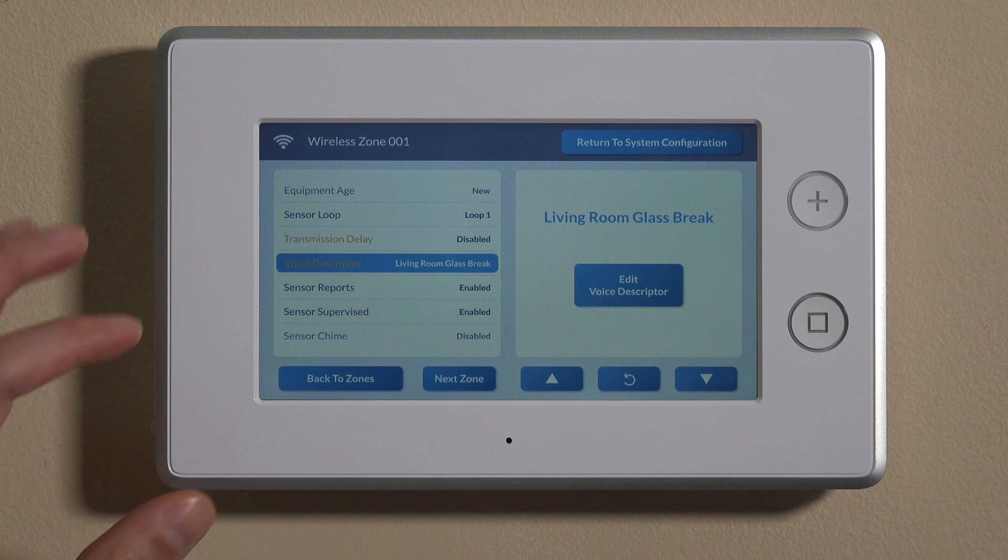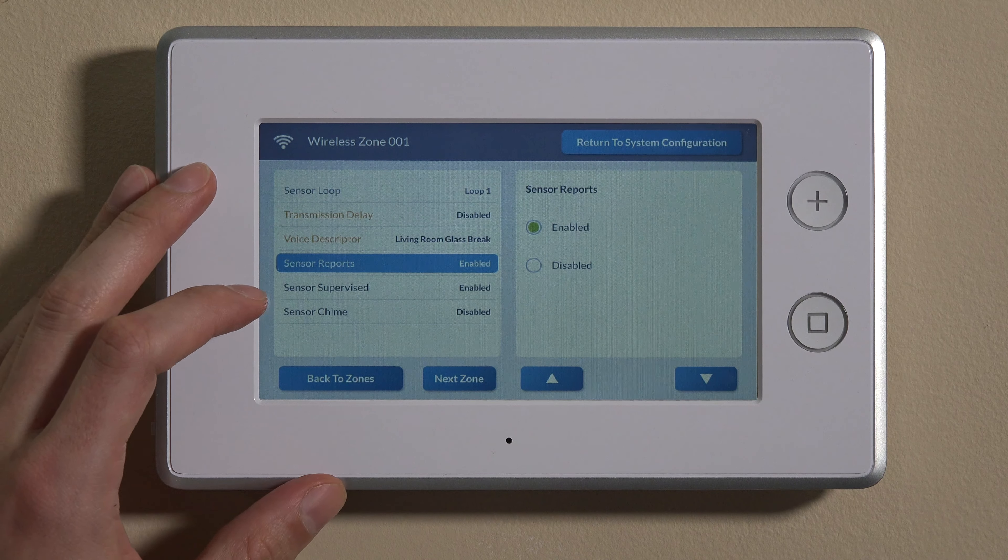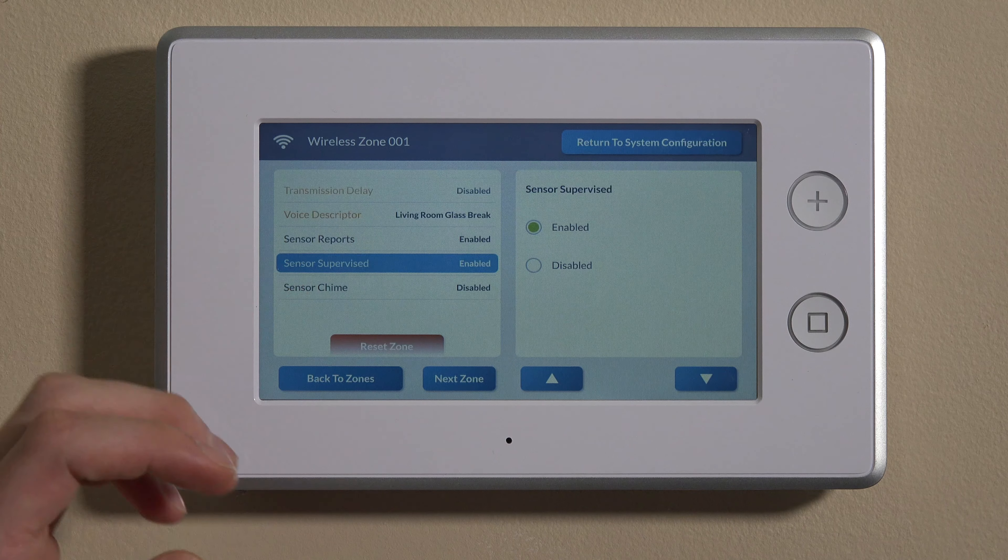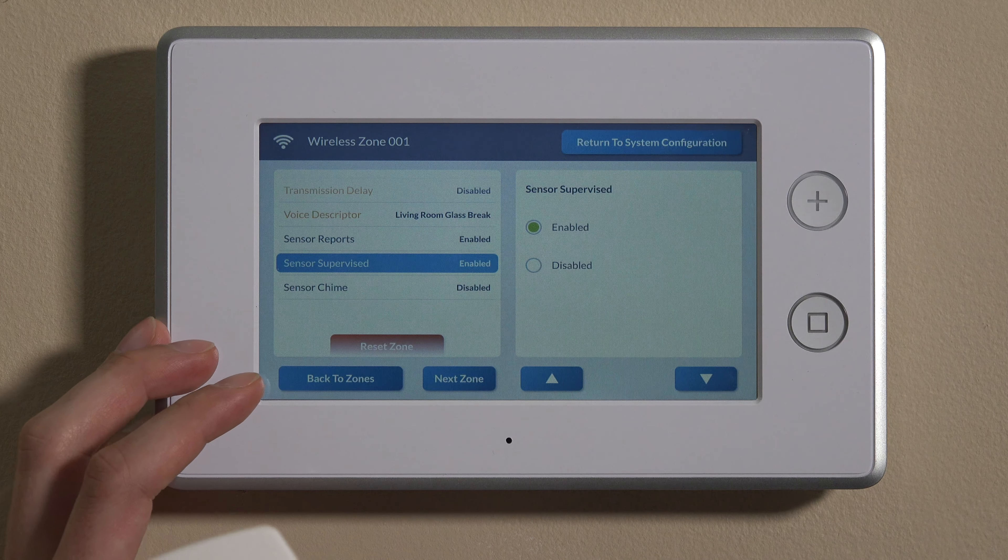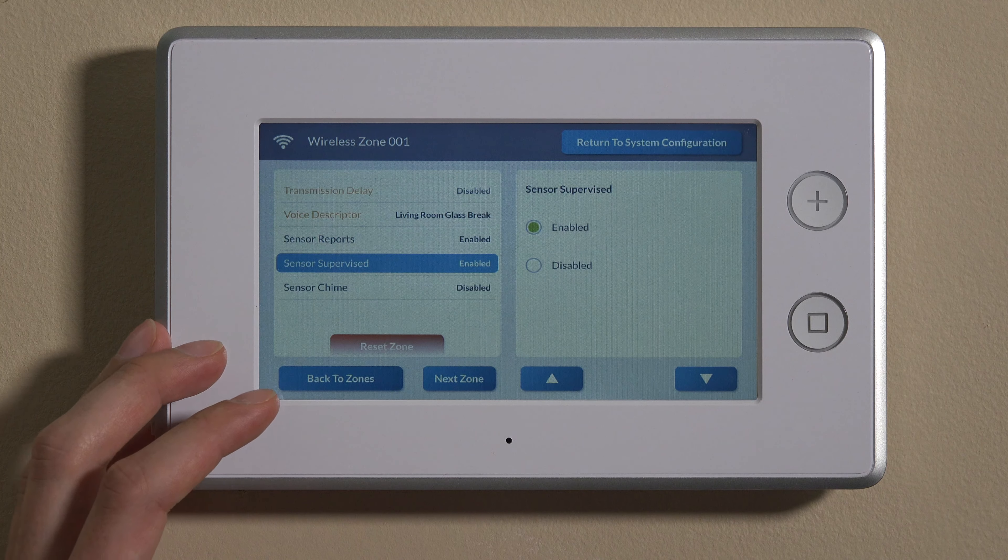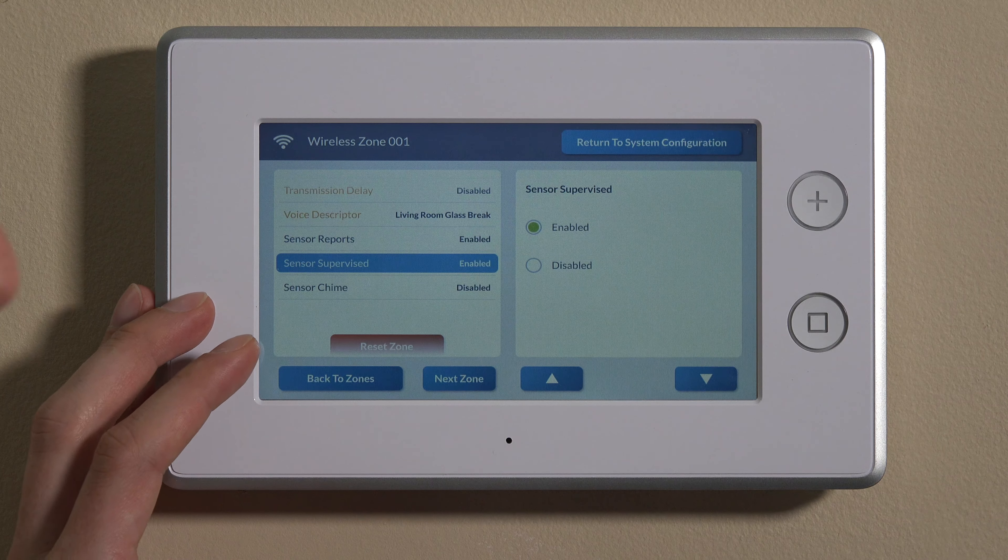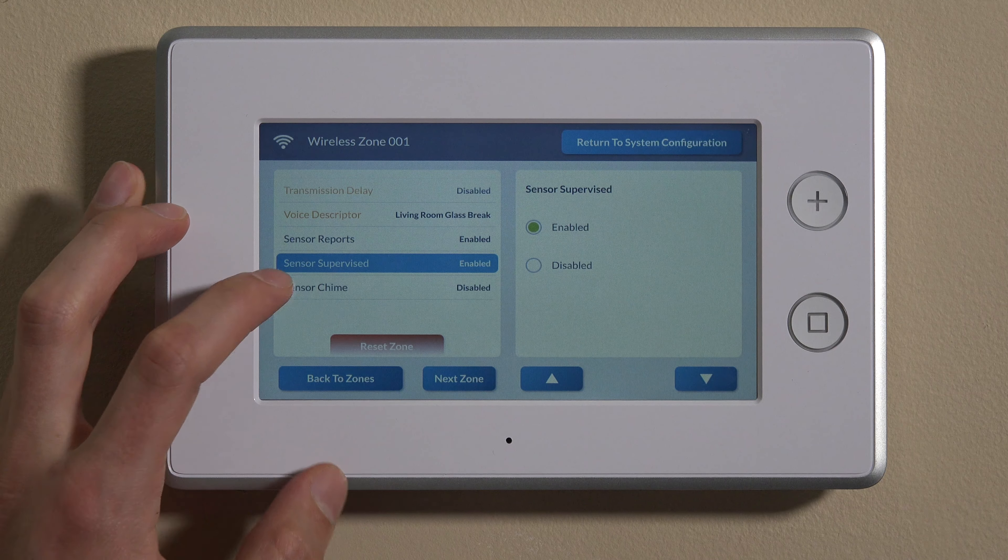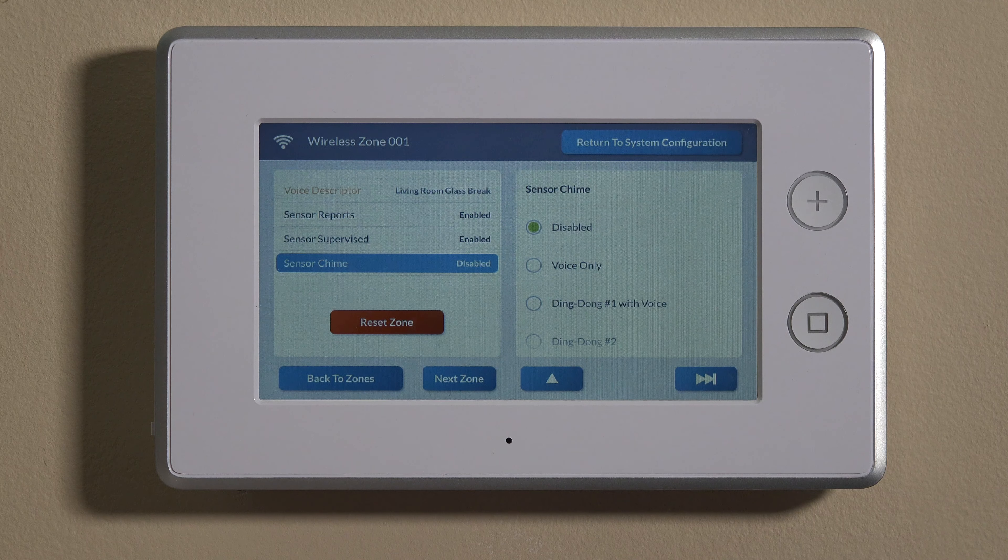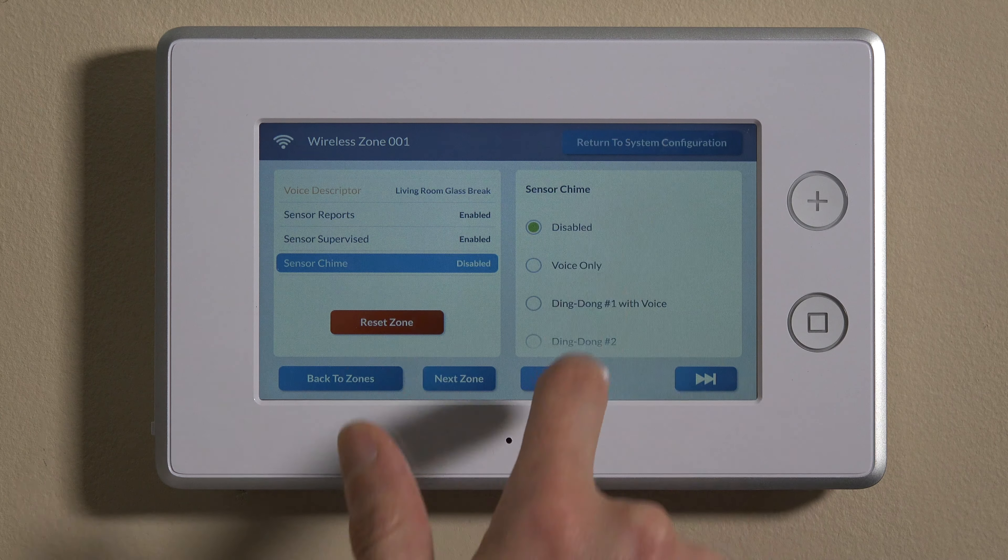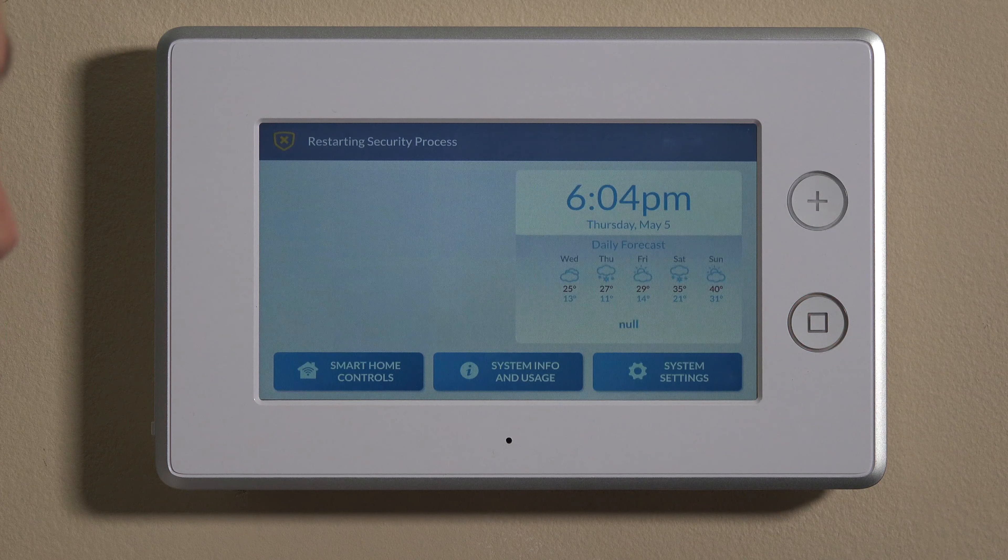And then there's only a few more selections here. We'll hit Sensor Reports. We always want Enabled so it sends out to the central station. Sensor Supervised, we always want to supervise this to make sure that the panel is in communication with this and it's online. If it ever does fall offline, it'll give you RF supervision trouble. We can hit Sensor Chime here. This isn't a unit that will fault very often and you don't really need a chime for it, so we'll just disable that for now. We'll hit Return to System Config, back out, and Save at the Summary screen.